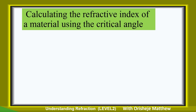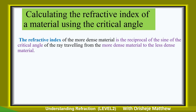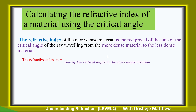Now, calculating the refractive index of a material using the critical angle. The refractive index, by definition using the critical angle, of the more dense material is the reciprocal of the sine of the critical angle, for a ray traveling from a more dense material to a less dense material. So the refractive index equals one over the sine of the critical angle in the more dense medium.